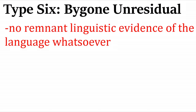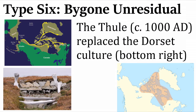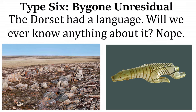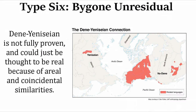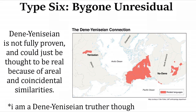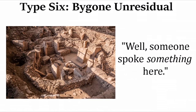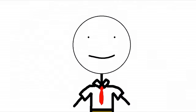Ancient Belgian, which may or may not have existed, also goes in 'bygone residual' because there is enough toponymic evidence suggesting it might have existed. 'Bygone unresidual' covers cases where there is no remnant linguistic evidence whatsoever. The Thule culture or proto-Inuit have no genetic connection with the Dorset culture, whom we know of through archaeological evidence — those people presumably spoke a language, but we know nothing about it. Unproven proto-languages also go here — Proto-Dené–Yeniseian could arguably still just be areal or coincidental similarities. We know a language was spoken by the humans who settled Göbekli Tepe, but we don't know what it was.